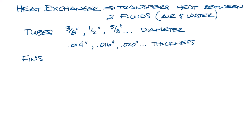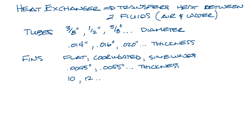The fins can be different styles like flat, corrugated, or sine waves and have different thicknesses like 0.0045 inches, 0.0055, 0.006 inches, and so on. And you can have different fins per inch like 10 fins per inch or 12 fins per inch. The variation in the thickness, diameter, and fins per inch affect the performance and the cost of the coil.